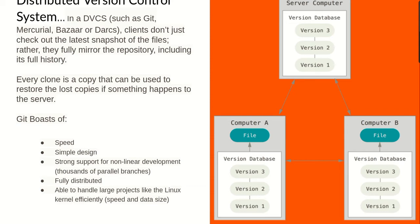Git boasts of speed compared to other version control systems. Git is quite very fast. Why? Because most of the operations you run, they run locally — you don't have to interact with the remote server. Unlike the centralized version control system like CVS, where you have to talk to the server, there's that network overhead of engaging with the server to and fro. With Git, everything is localized — on your local machine you have everything, and almost every command interacts directly with you locally.